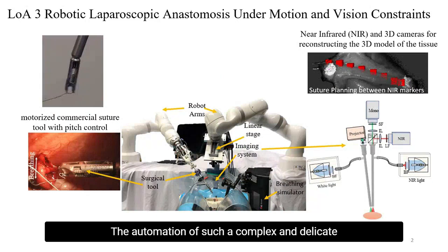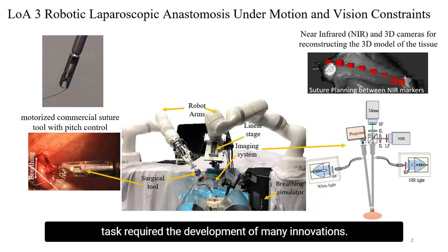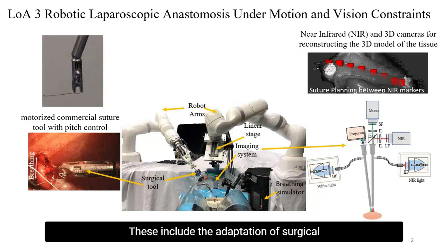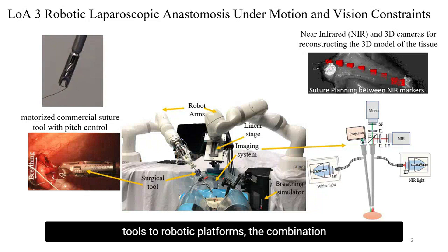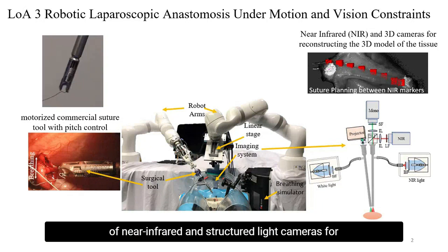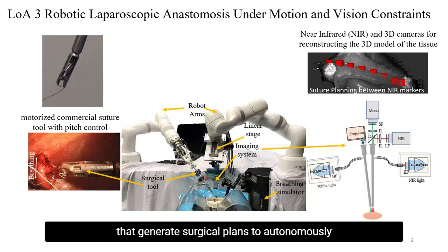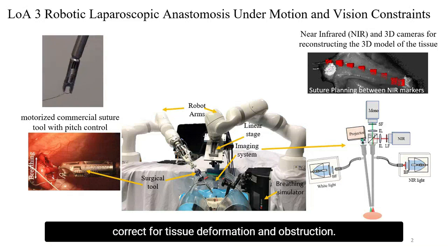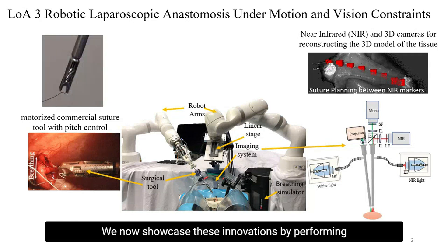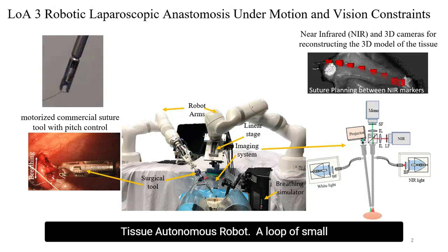The automation of such a complex and delicate task required the development of many innovations. These include the adaptation of surgical tools to robotic platforms, the combination of near-infrared and structure-like cameras for three-dimensional imaging, and robotic control schemes that generate surgical plans to autonomously correct for tissue deformation and obstruction. We now showcase these innovations by performing a small bowel anastomosis using the Smart Tissue Autonomous Robot.